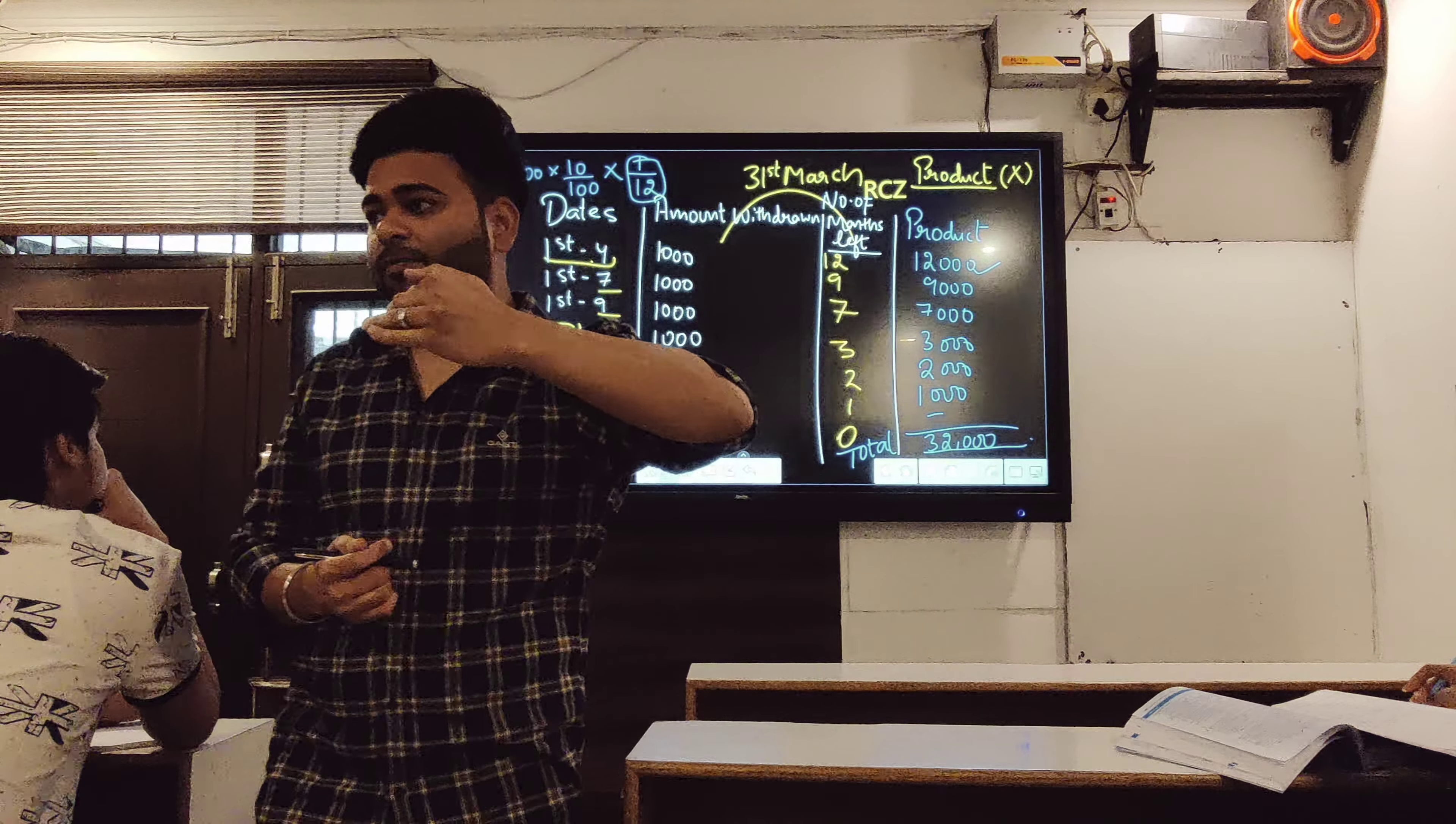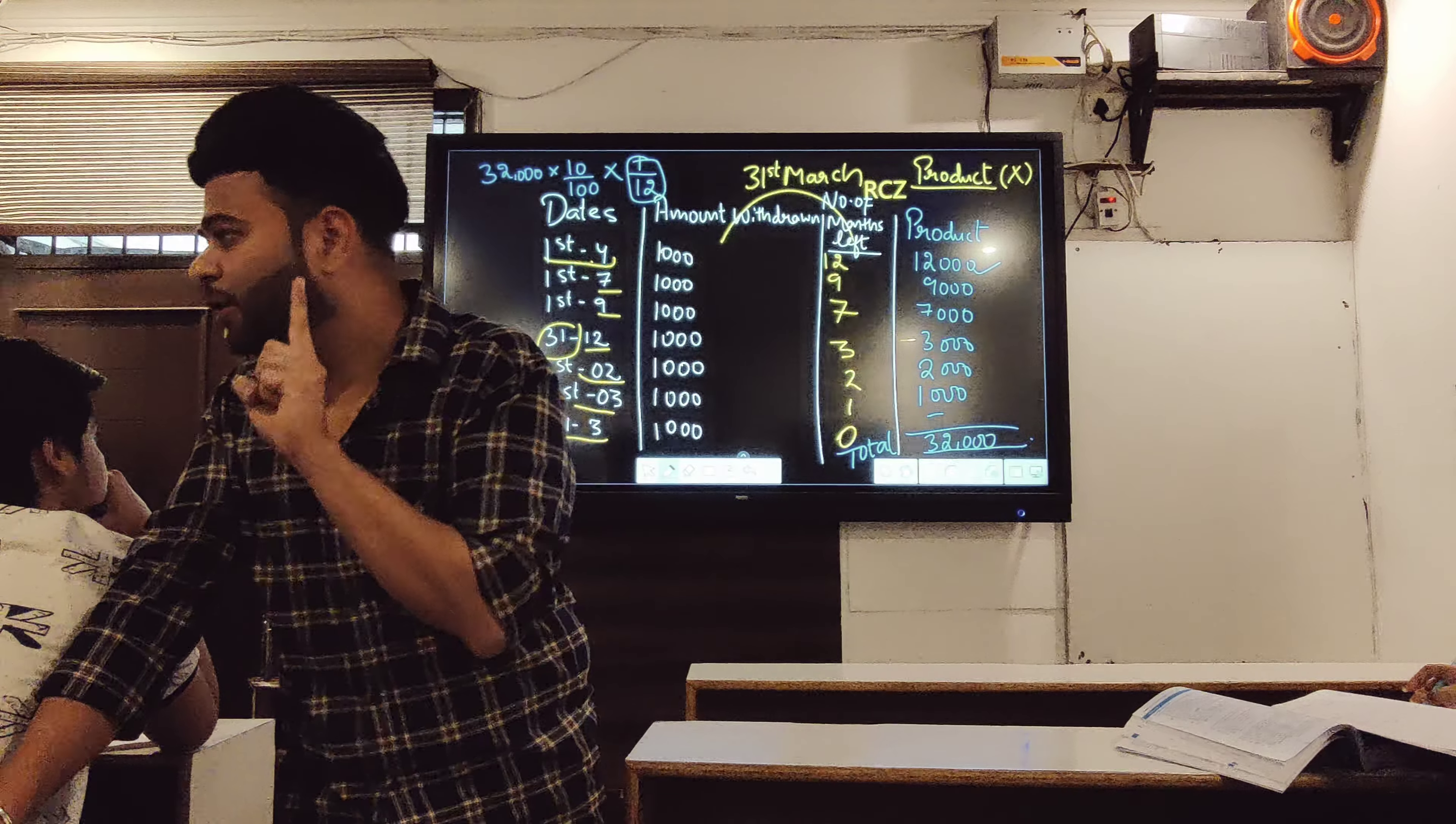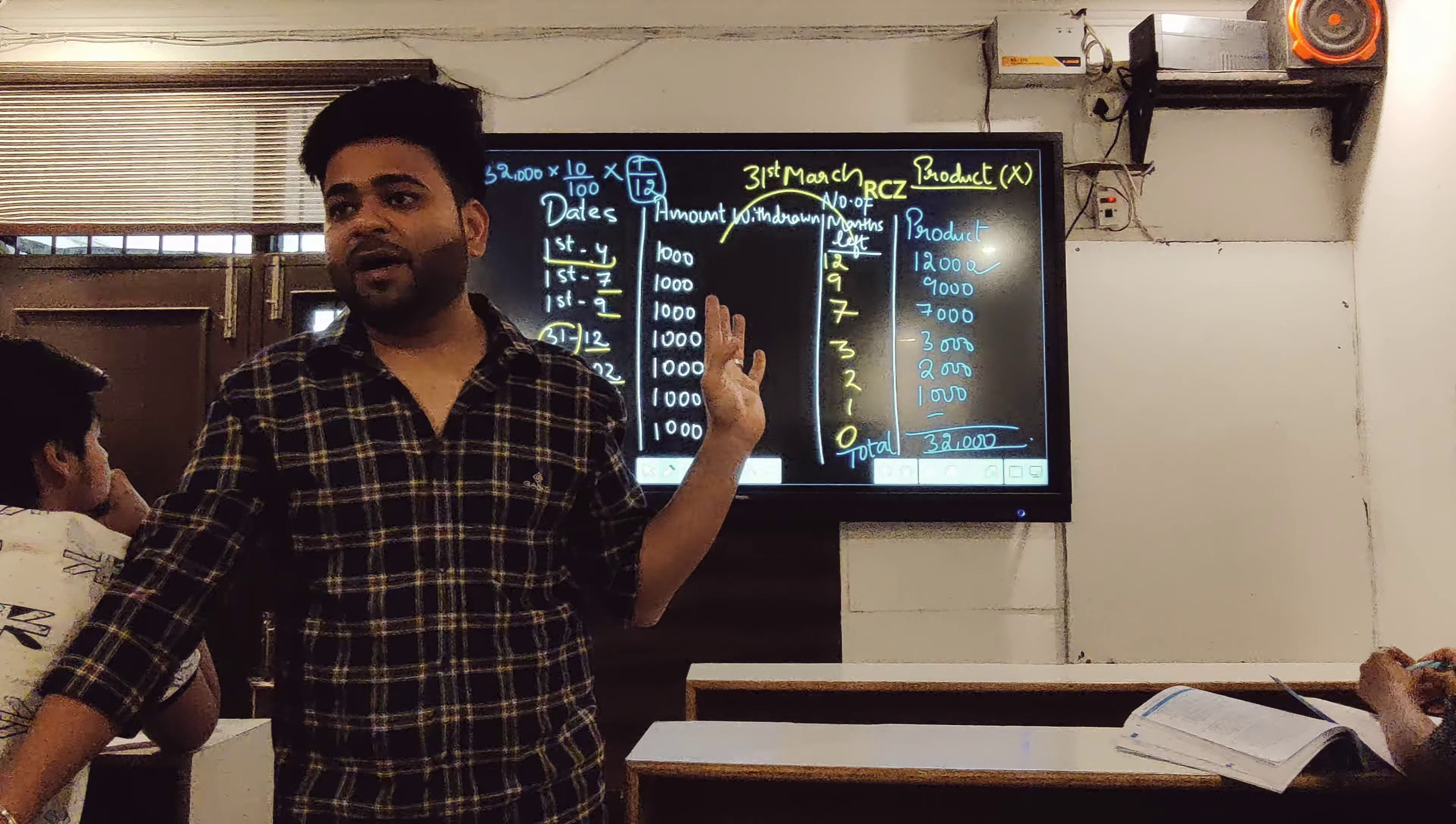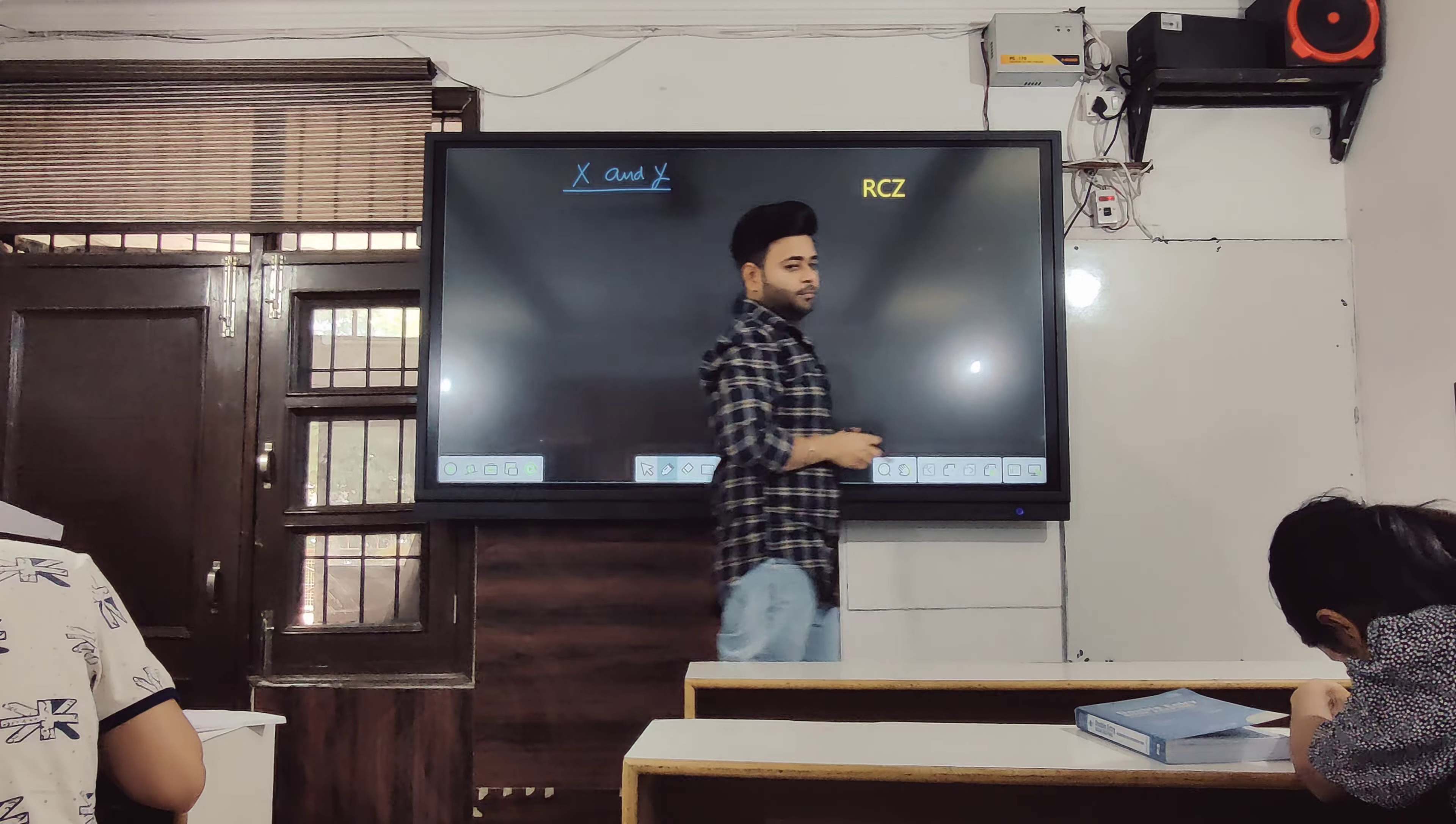So first two columns are given in the question - dates and amounts. Third column is number of months left. After that, multiply those two and call it product. Take the total. Now we need to calculate interest on drawings. My total product is 32,000. On that, 10 percent. Most important thing that students forget in board exam: one by twelve.